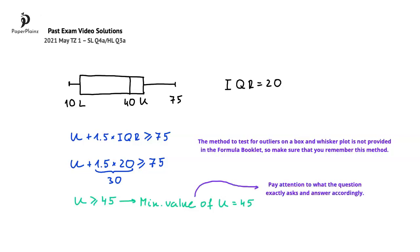The second tip is that you pay attention to what the question exactly asks and answer accordingly. Here for example, it is important that after carrying out the calculations, you explicitly state that the minimum possible value of u is 45. If you don't do this, you might not get full marks.